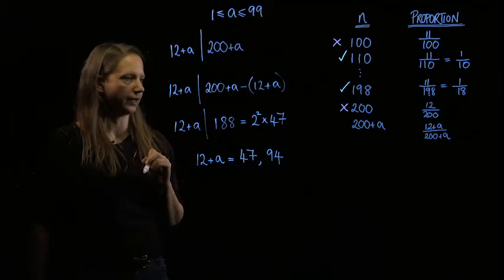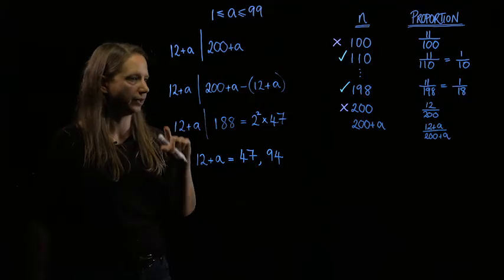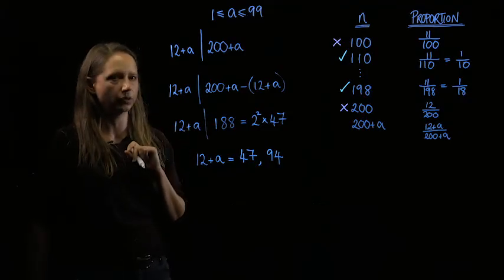And those give us our possible values of a, and we can return to our table to finish it off for those values of n between 200 and 299.